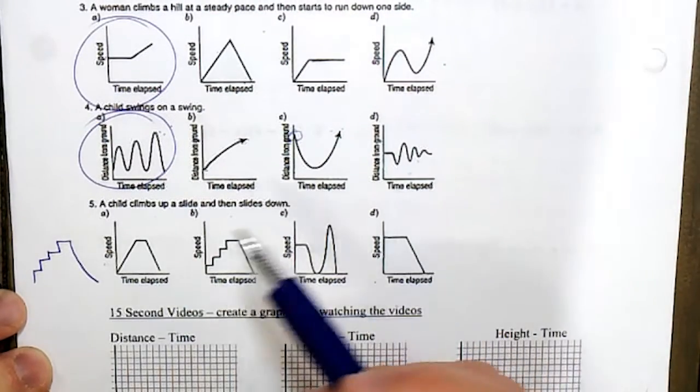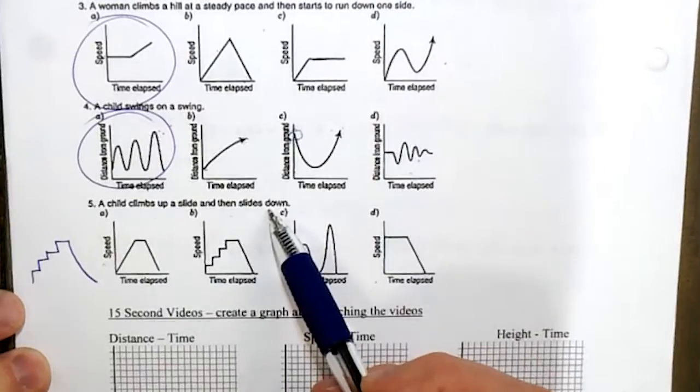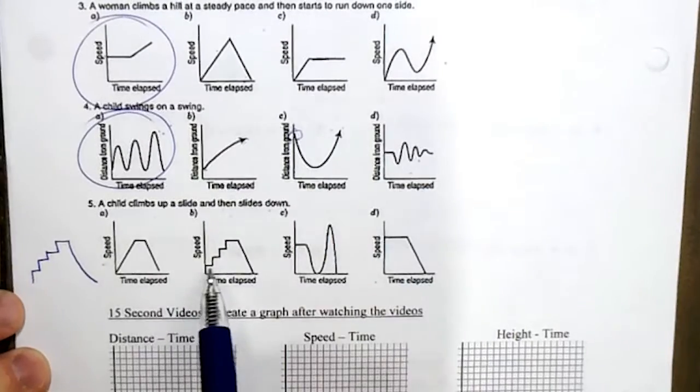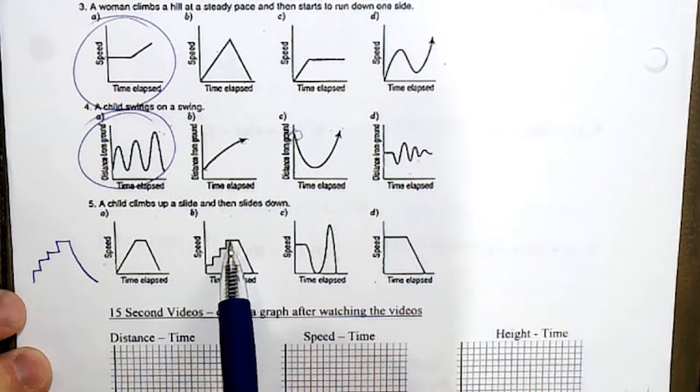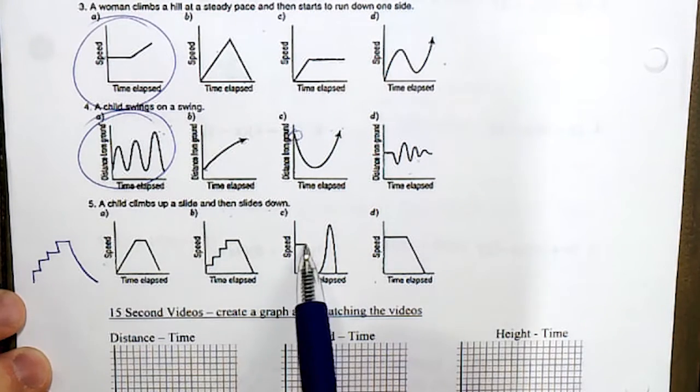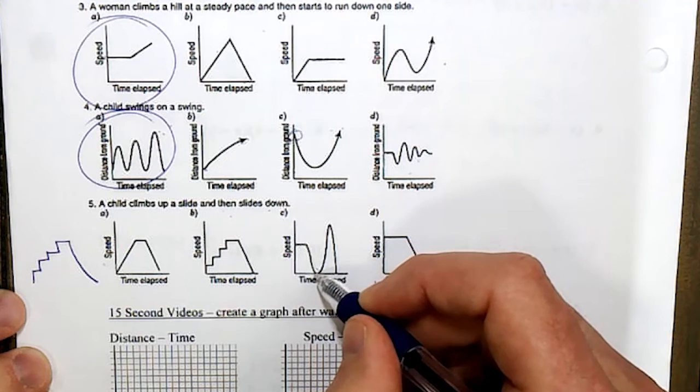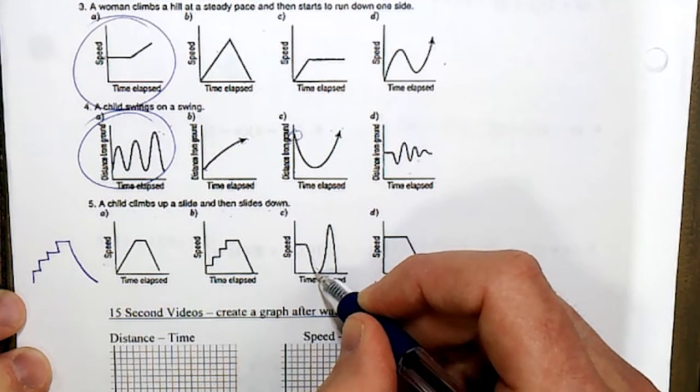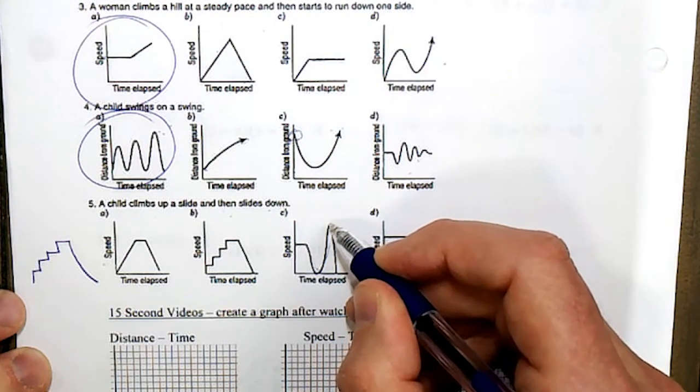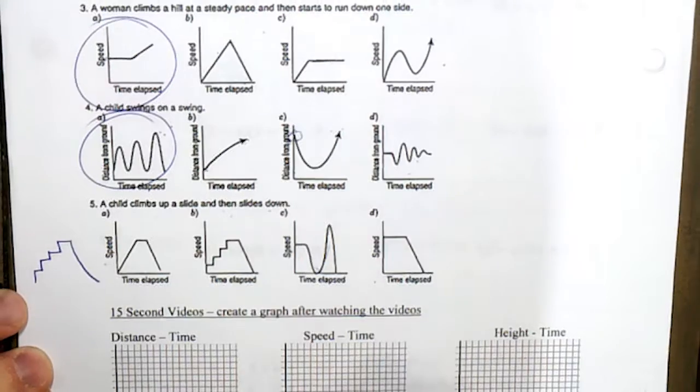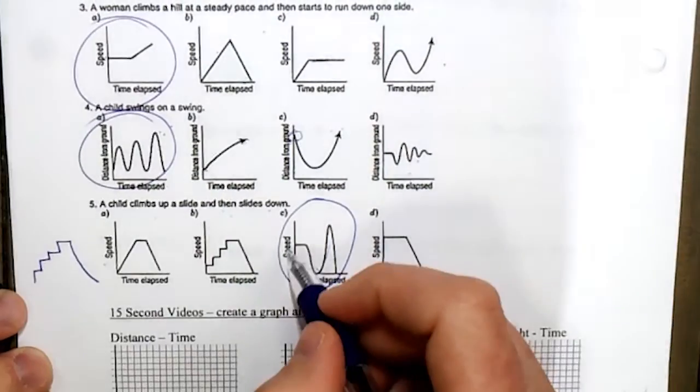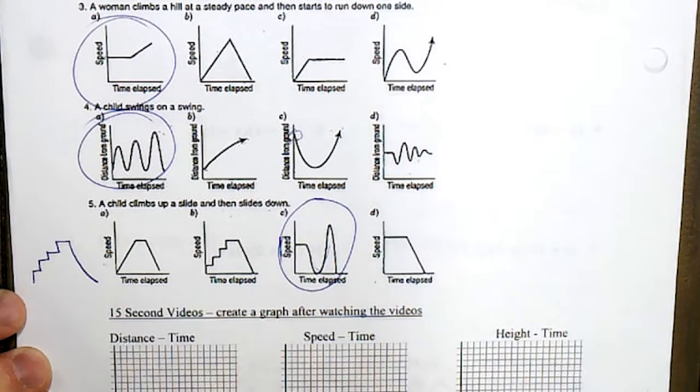So the only one that starts steady - this one looks like she's climbing the stairs, but we're not talking about height, we're talking about speed. This one has a steady speed to start with, then she pauses while she sits down. She starts sliding, she's going faster and faster, and when you reach the bottom of the slide suddenly you hit that bottom and you stop. This one makes sense, and this one's the hardest one because it's focused on speed, not on the height of the child.